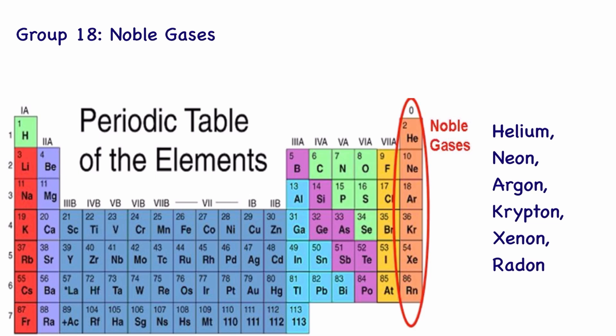In this video, we will learn a trick to remember the noble gases. Group 18 of the periodic table has chemical elements that are called noble gases. These are helium, neon, argon, krypton, xenon, and radon.